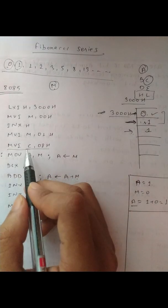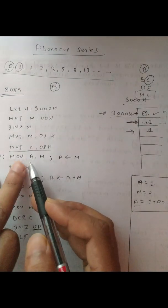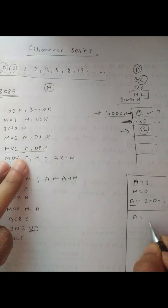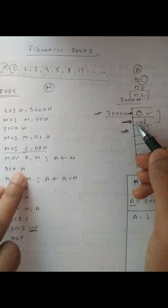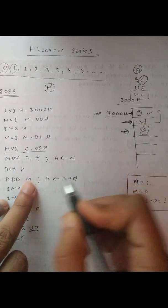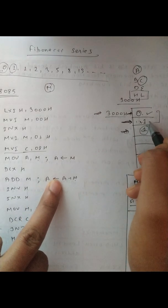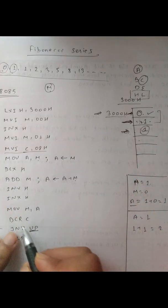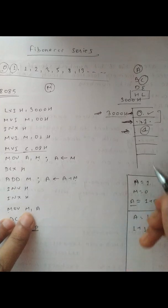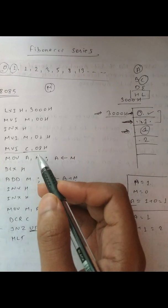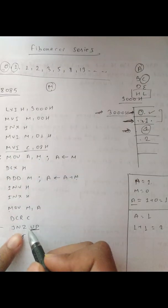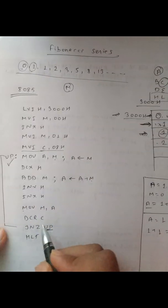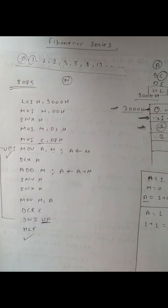Let's do a dry run. In the next iteration the counter becomes 7. The accumulator gets the value 1 from the current HL location. We decrement HL, and ADD M gives A equals 1 plus 1 equals 2. We increment HL twice and store 2 in the new memory location, then decrement the counter to 6. This loop continues until the counter reaches zero, at which point the program halts. That covers the main logic of the Fibonacci series program.